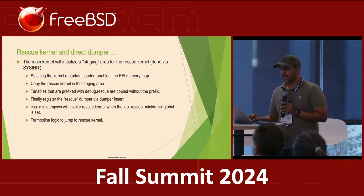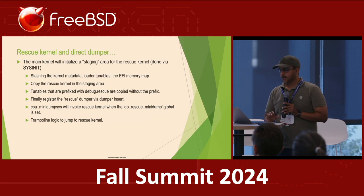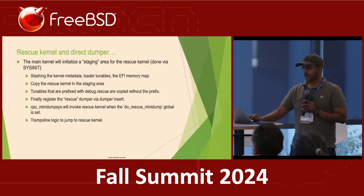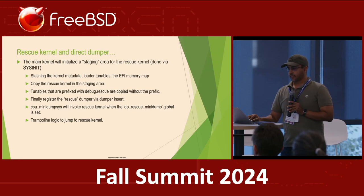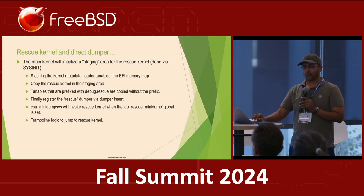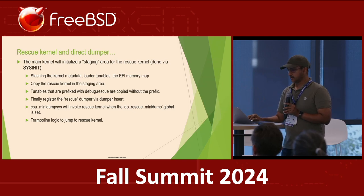The main kernel versus the rescue kernel: when the main kernel boots, it has to initialize a staging area for the rescue kernel via sysinit. It does essential metadata stashing — loader tunables and the EFI memory map — then copies the rescue kernel to the staging area. Any tunables you want to pass to the rescue kernel are prefixed with debug.rescue; the main kernel processes them and sets them up for the rescue kernel, where the rescue prefix will be dropped. Finally, it registers the rescue dumper via dumper_insert. At this point, when you check your dump device, it will show up as rescue rather than the standard default one.